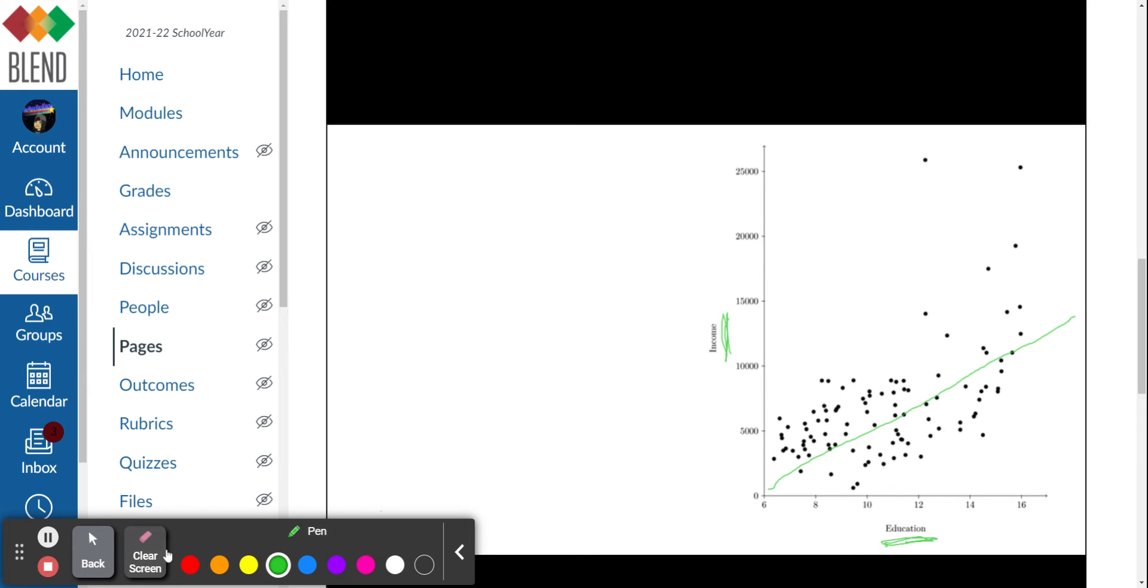Alright, so that's a positive correlation. Positive correlation means that when the number on the x-axis goes up, the number on the y-axis goes up as well.